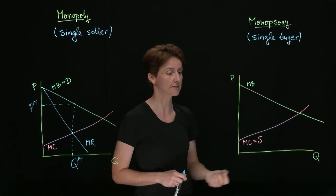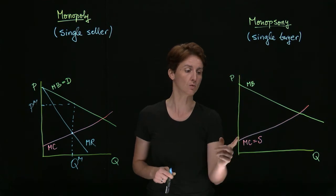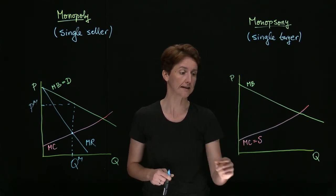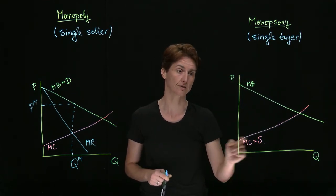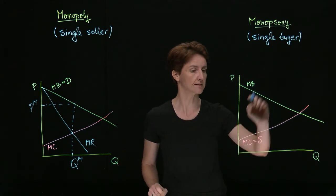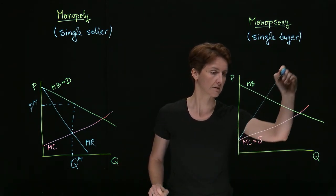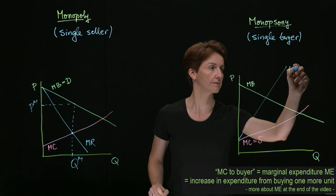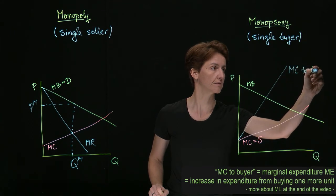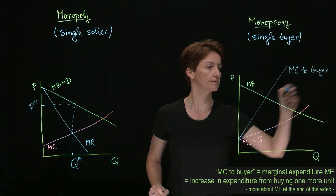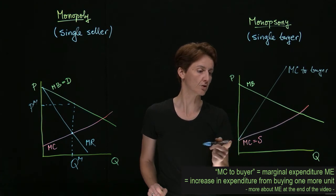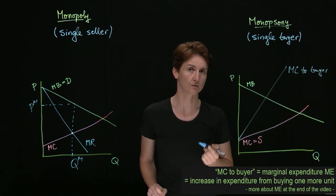Which means that the marginal cost to the buyer will rise twice as fast as the marginal cost of production. So marginal cost in this case, once again, to the buyer will have twice the slope of the marginal cost of production to the seller.